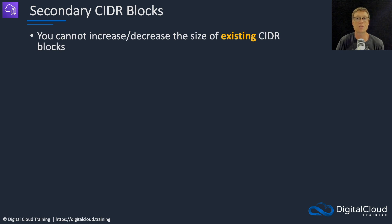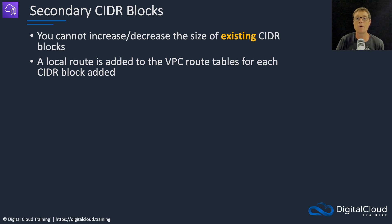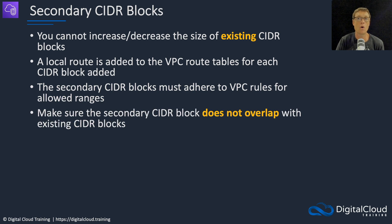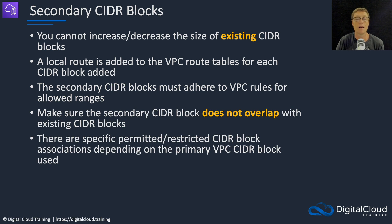You cannot increase or decrease the size of any existing CIDR blocks. So if you run out of IP addresses or need to support a new application or new VPCs that require addresses different from or beyond what you already have, you can add secondary CIDR blocks to your VPC. A local route is added to the VPC route tables for each CIDR block you add. Secondary CIDR blocks must adhere to the VPC rules for allowed ranges, just as the primary CIDR block does, and must not overlap with your existing CIDR blocks. There are specific permitted and restricted CIDR block associations depending on the primary VPC CIDR block you chose.